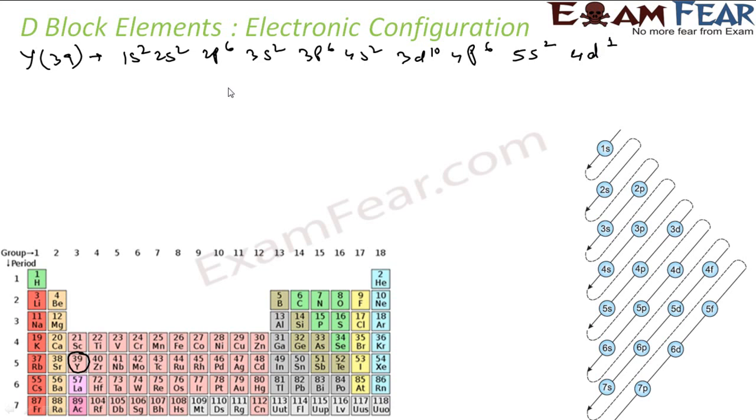If you see here, the nearest noble gas is krypton 36. 4, 6, 10, 12, 16, 12 plus 6, 18, 20, 30, 36. So it is this place. You can actually say krypton, so I can say this is nothing but krypton.